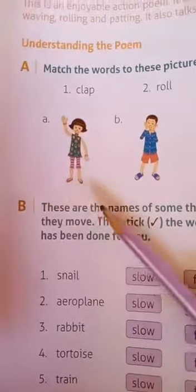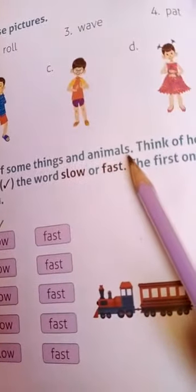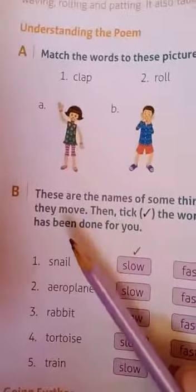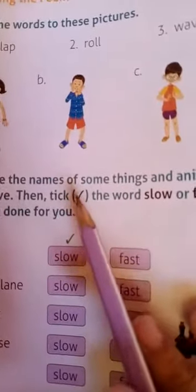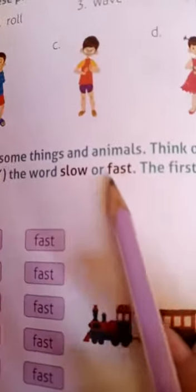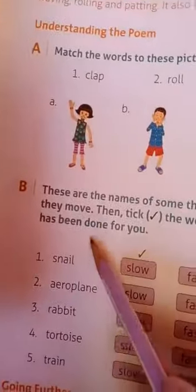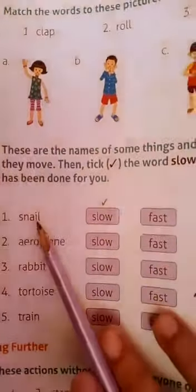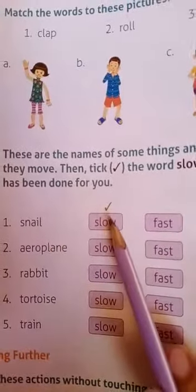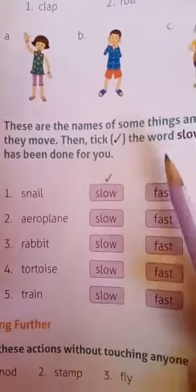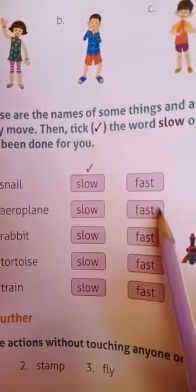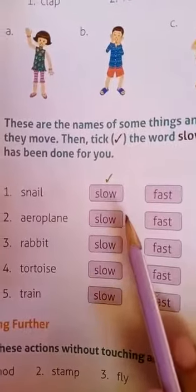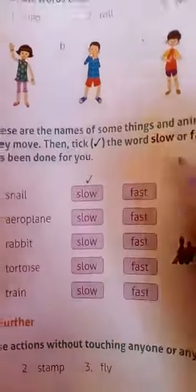Exercise B: These are the names of some things and animals. Think of how they move, then tick slow or fast. The first one has been done for you. Snail — it moves slowly, so tick slow. Number 2, aeroplane — how does it move? It moves fast, so tick fast. Number 3, rabbit — it runs very fast.